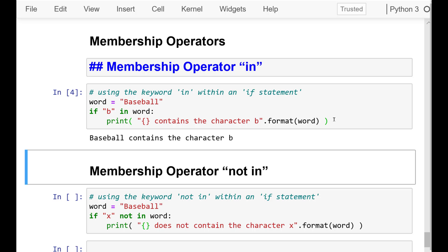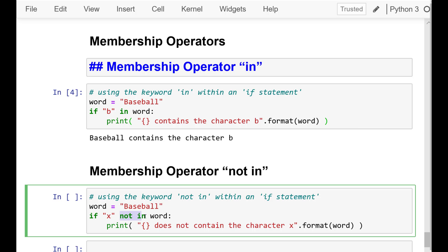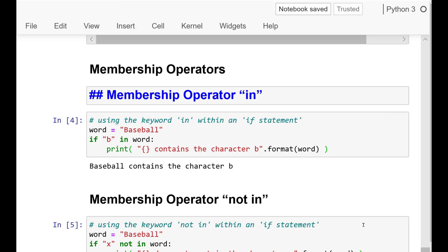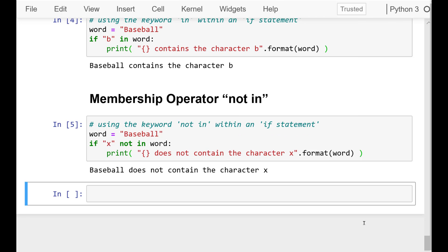Likewise, if you want to check to see if an object does not include a specific value, you would use the NOT IN operator. This is essentially just checking the opposite of the IN operator. Let's see. If we run the cell, the resulting output is baseball does not contain the character X. It simply checks to see if the character X is not included in the string value of our word variable.